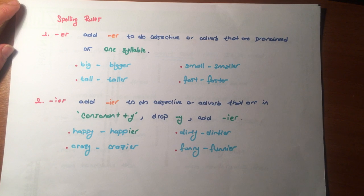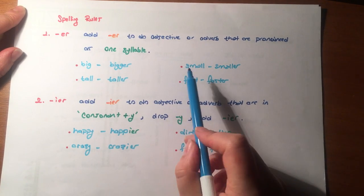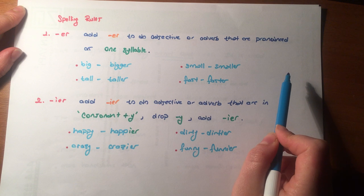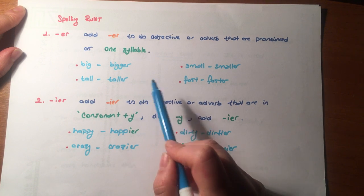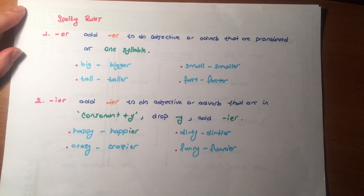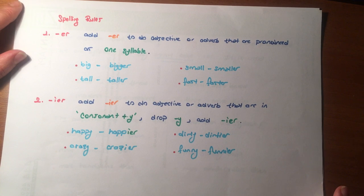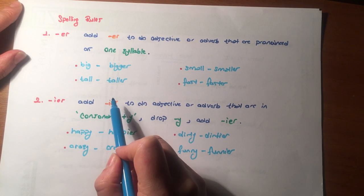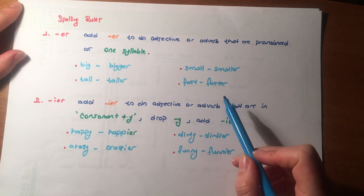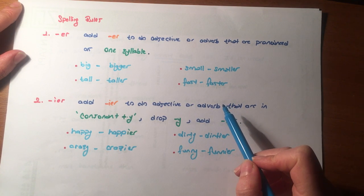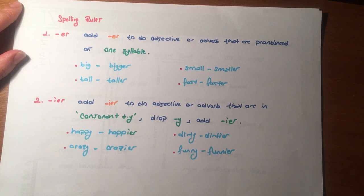Yes, let's continue with the spelling rules. We add '-er' to the adjective or adverb that is pronounced as one syllable. Tek heceli sıfat ya da zarflara '-er' ekleyeceğiz. Az önceki örnekte de gördüğümüz gibi: big → bigger; tall → taller; small → smaller; fast → faster. Tek hece ağzımızdan çıkıyor — fast, faster; small, smaller gibi.